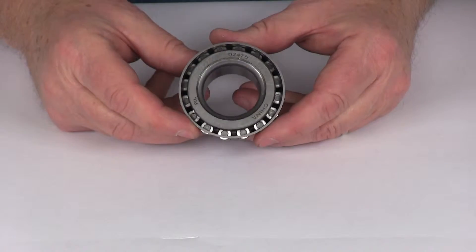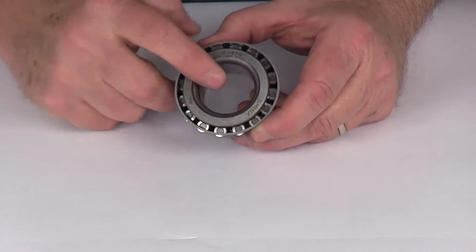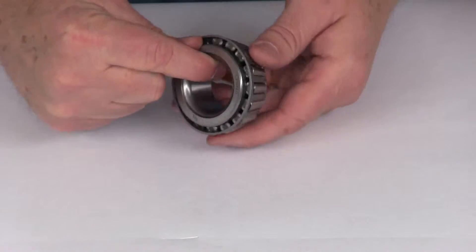Today we're going to take a look at the replacement trailer hub bearing number 02475. This is a high quality tapered roller bearing which is designed for high speed use.